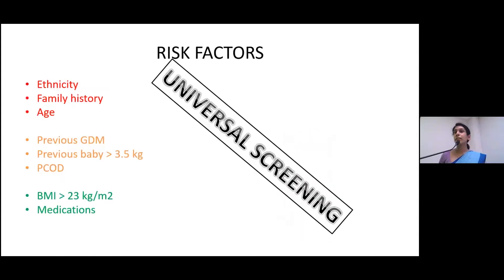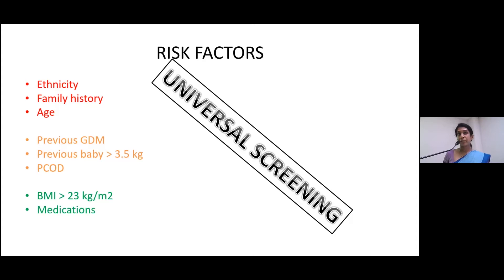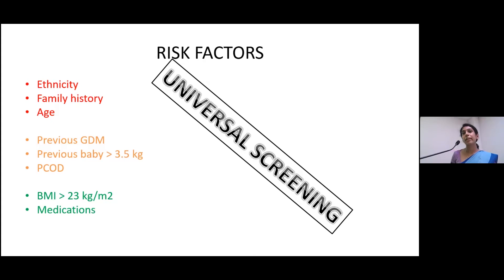Risk factors include South Asian ethnicity, which carries a high risk of developing type 2 and gestational diabetes. A first-degree relative with type 2 diabetes, age over 25 — the cut-off has come down from 35 — previous pregnancies complicated with gestational diabetes, previous macrosomia, polycystic ovarian disease, obesity or overweight with BMI cut-off over 23 for us unlike Europeans, and certain medications like steroids. Therefore, all patients willing to go through pregnancy should be universally screened for diabetes before pregnancy.